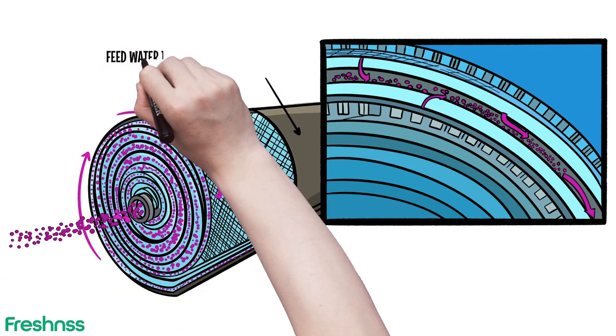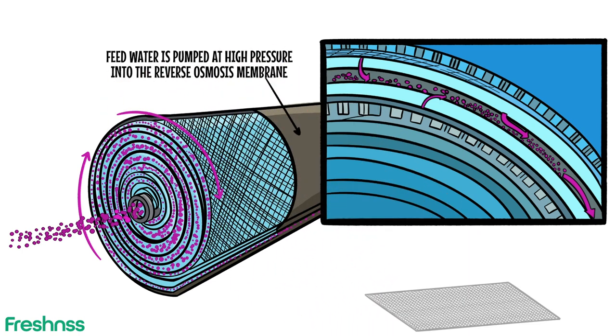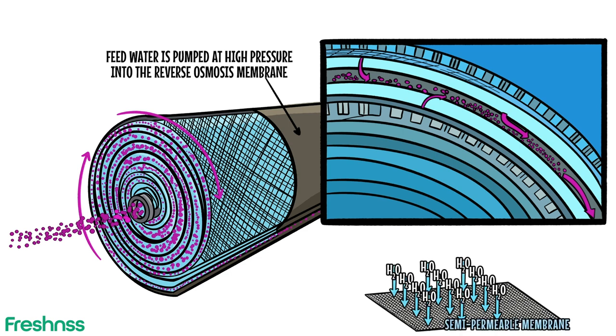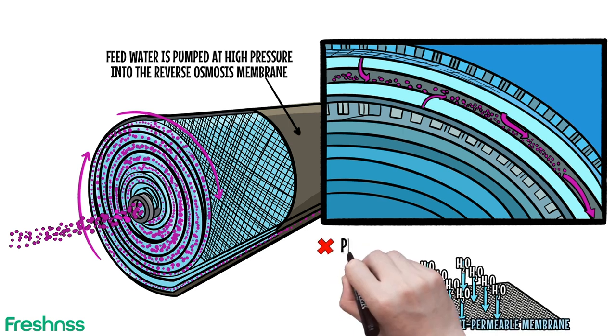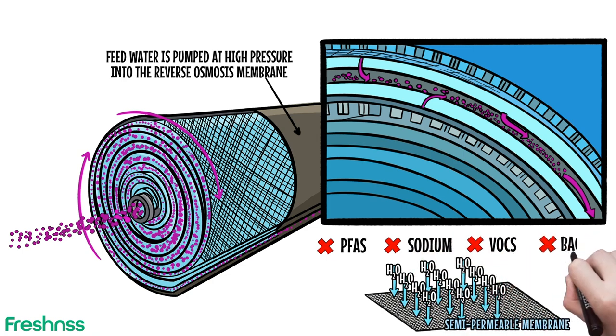Feed water is pumped at high pressure into the reverse osmosis membrane. As it travels, smaller H2O molecules pass through the semi-permeable membrane, while larger particles like PFAS, sodium, VOCs, and bacteria do not.